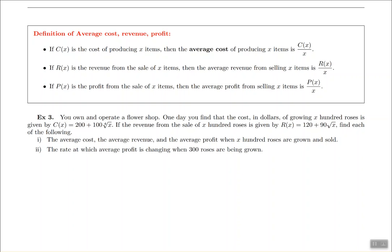I want to define these terms that you might hear in an economics class or in a business class. They are average cost, average revenue, and average profit. The average cost is basically the cost divided by the number of items you're making. X represents the number of items you're making or selling. If you divide the cost of making those X items by how many items you made, you get on average how much it costs to make each individual item.